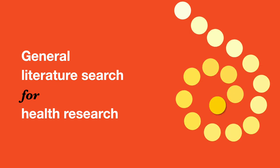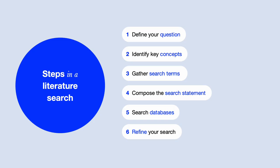Let's search for health research literature step by step. We'll explore a general search strategy for quickly finding research evidence for a literature review. If you're conducting a systematic review, we recommend following our tutorial on systematic search methods. The link is in the description.